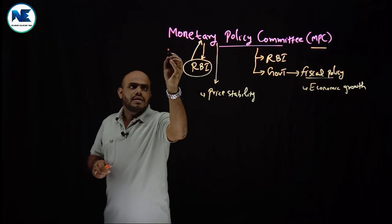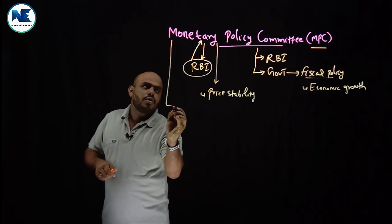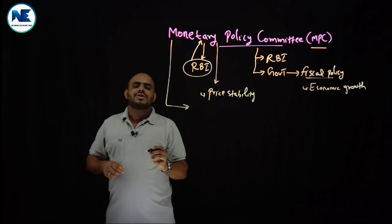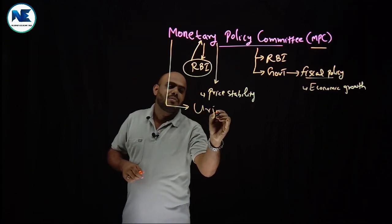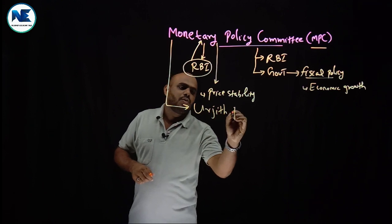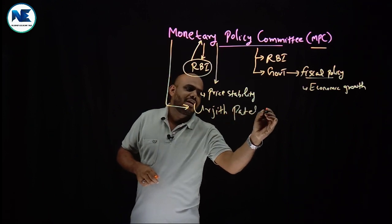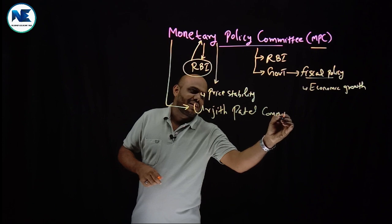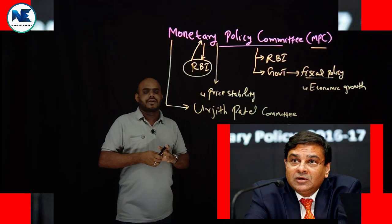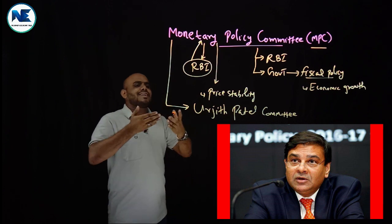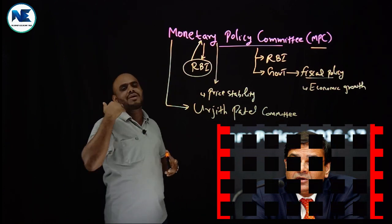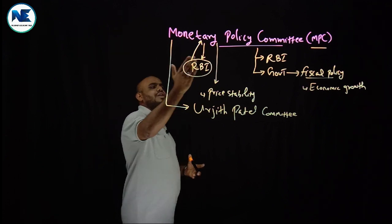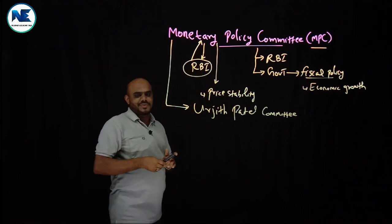Another proposal for the Monetary Policy Committee was actually recommended by the Urjit Patel Committee. Urjit Patel was the RBI Deputy Governor during the Raghuram Rajan period, and later became RBI Governor. The Monetary Policy Committee was set up around that same time.